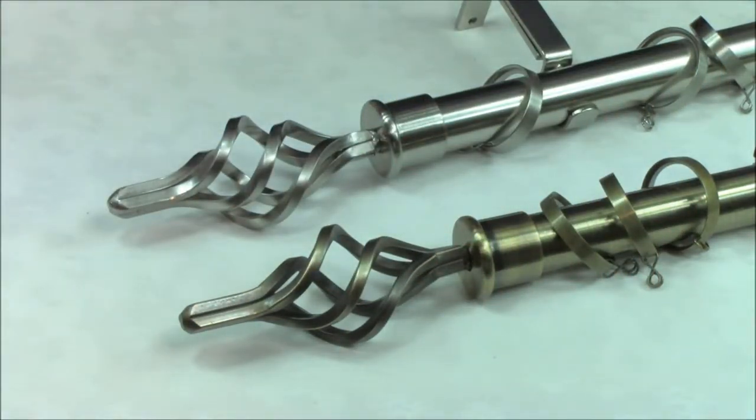The pole is supplied complete with matching fixtures, fittings, finials, brackets, rings, and fitting instructions, and can be cut by hand with a fine-tooth saw if necessary.